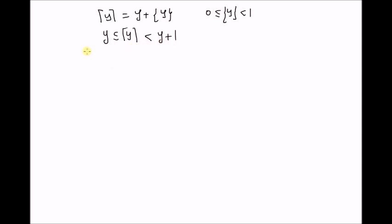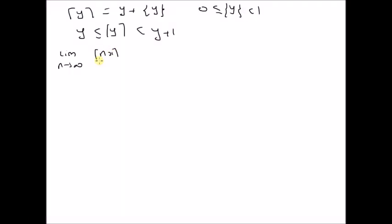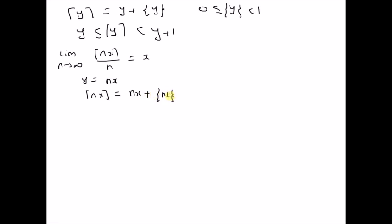From this definition, we want to prove that the limit as n tends to infinity of the ceiling function of nx divided by n is equal to x. So let us assume that y is equal to nx, that is, y is a multiple of the number x, where n can be either an integer or a real number. By extension, the ceiling of nx is equal to nx plus a small fraction, denoted by braces — {nx} inside braces.